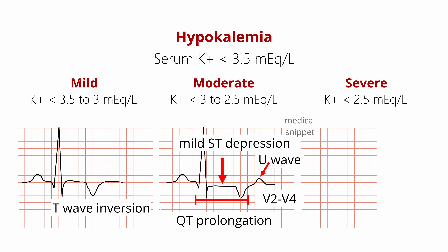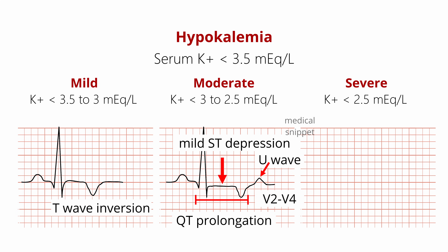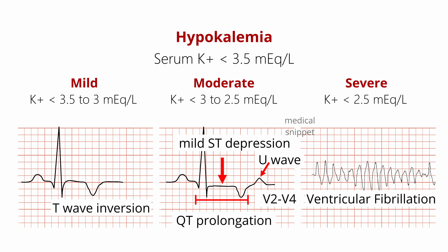Severe hypokalemia, i.e., when serum potassium level is less than 2.5 milliequivalents per liter, causes torsades de pointes and ventricular fibrillation.